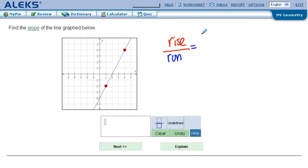To find the rise, you simply subtract the y-coordinates. And to find the run, you subtract the x-coordinates.